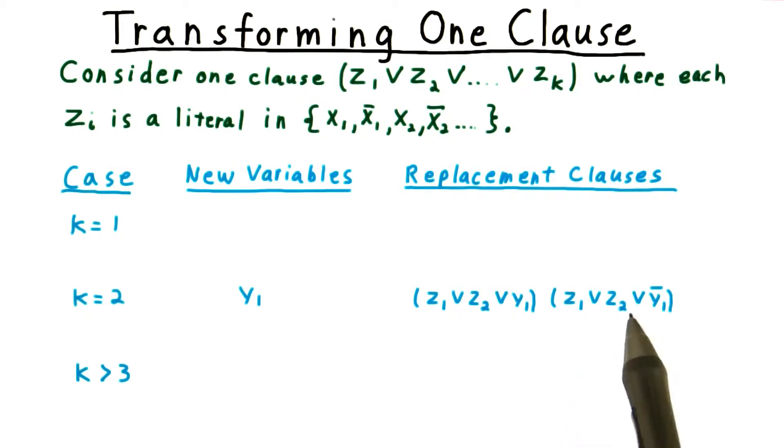On the other hand, taking a satisfying assignment for these clauses here, the Y literal has to be false in one of these two clauses. And so therefore, Z1 or Z2 must be true.